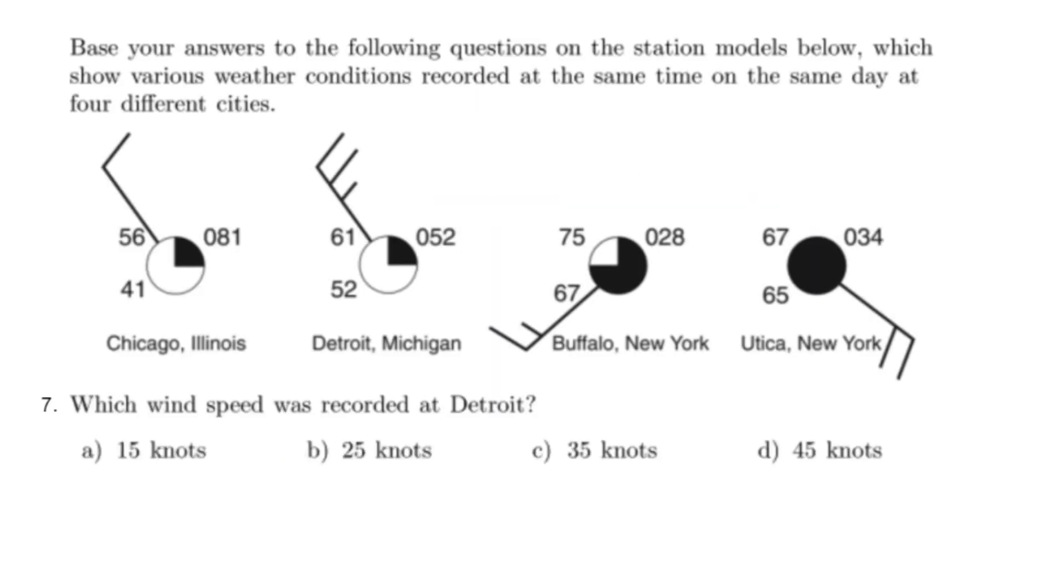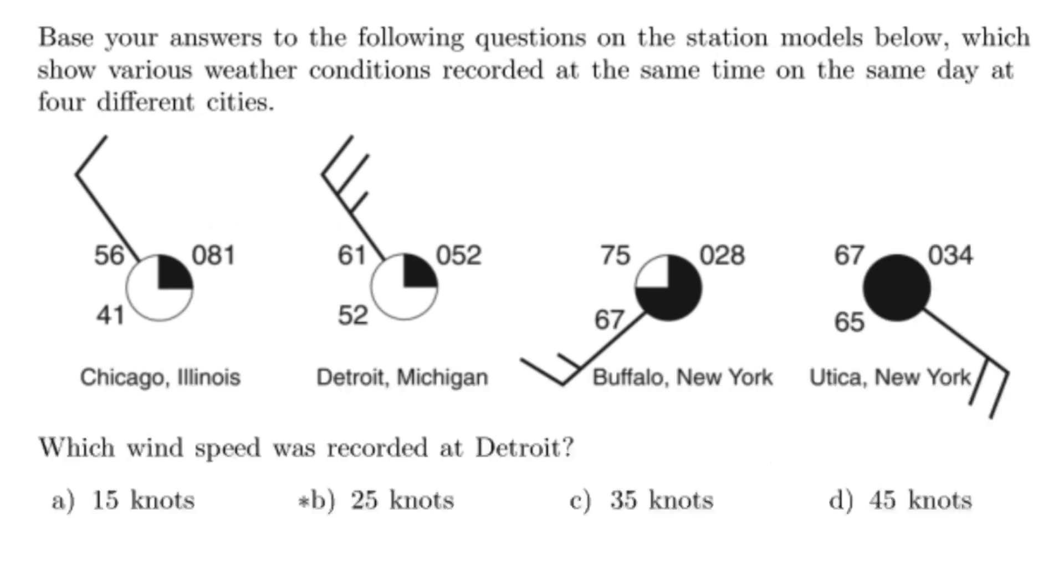So go ahead and pause this video. Try number seven. Base your answers to the following questions on the station models below, which show various weather conditions recorded at the same time on the same day at four different cities. Which wind speed was recorded in Detroit? The correct answer is 25 knots.